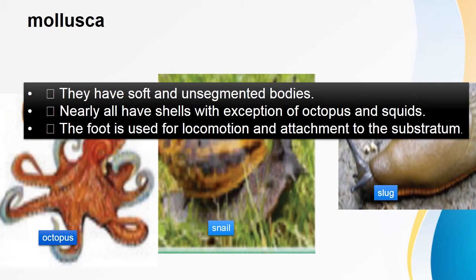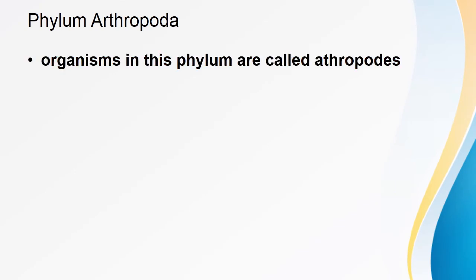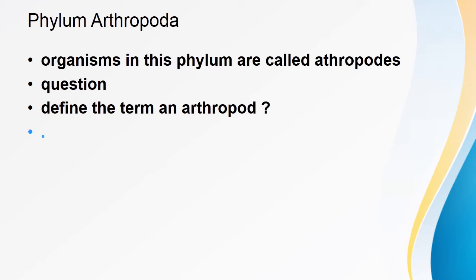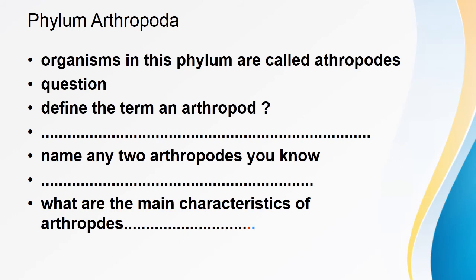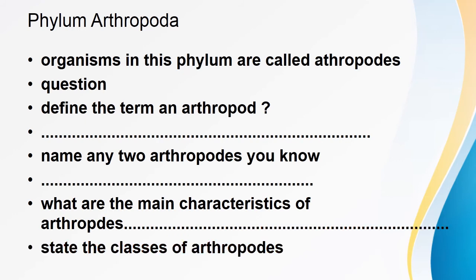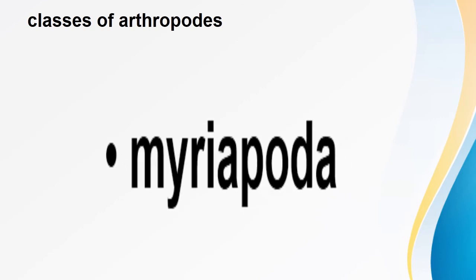Phylum Arthropoda — organisms in this phylum are called arthropods. You can now answer these questions: define the term arthropod; name any two organisms that are arthropods; state the main characteristics of arthropods; state the classes of arthropods. The classes of arthropods are: Myriapoda, Crustacea, Arachnida, and Insecta.